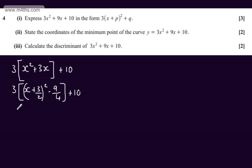Multiplying through by the 3, we'll have 3 lots of x plus 3 over 2 all squared. Then I'm going to have minus 27 over 4 and then I need to add the 10. I'm going to write this now as plus 40 over 4.